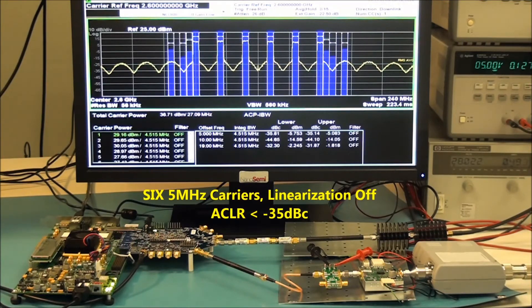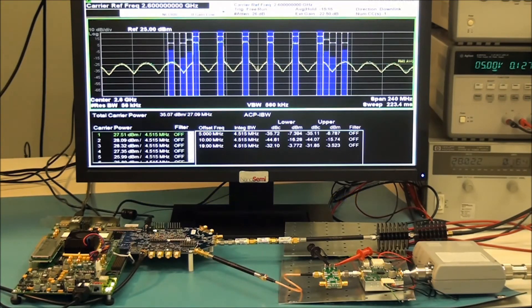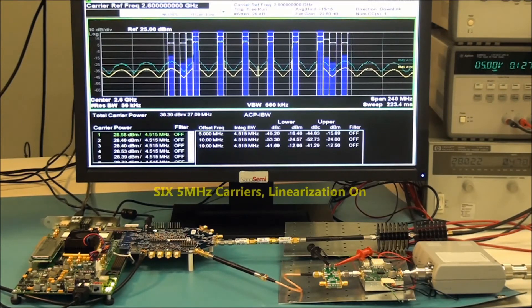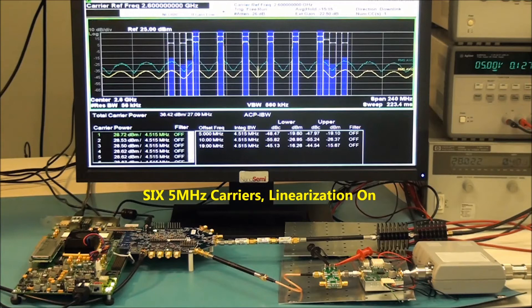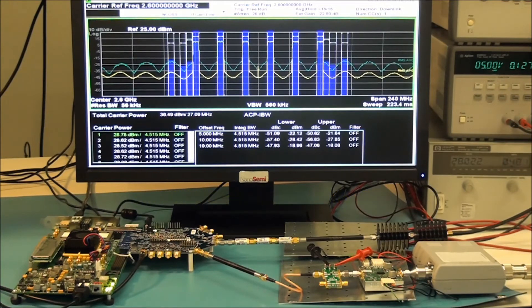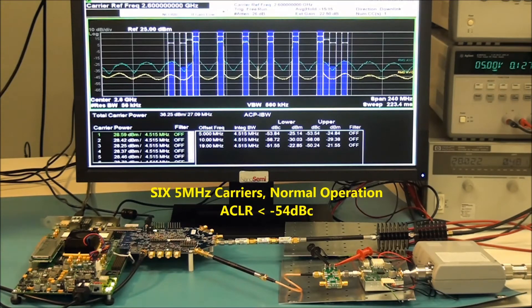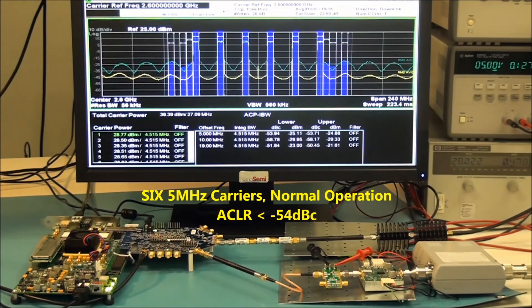This waveform consists of six 5 MHz LTE carriers uniformly spaced at 19 MHz apart. Again, we see that their performance greater than minus 54 dBc is maintained over various carrier configurations.